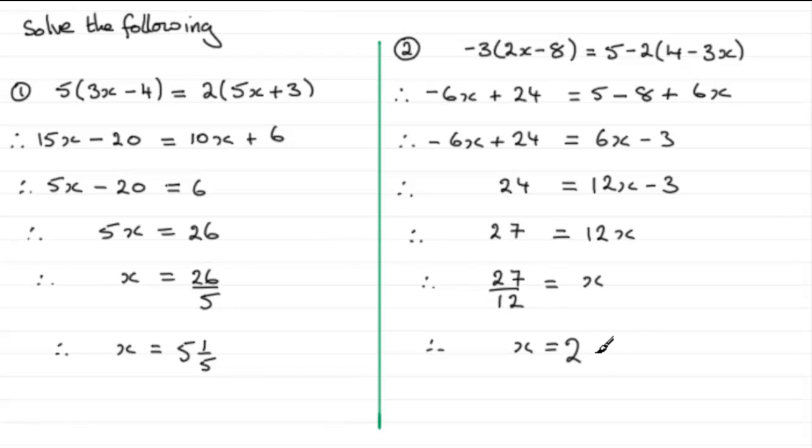That uses up 24 of the twelfths and then I'm going to have 3 twelfths left over. And 3 twelfths reduces to a quarter so therefore x is going to be equal to 2 and a quarter.